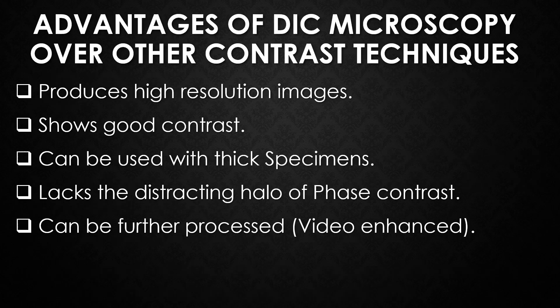An advantage of using DIC Microscopy over other contrast techniques such as phase contrast or oblique contrast is that in DIC, the full aperture of the microscope is used. For example, in phase contrast, the annulus of the condenser restricts the aperture, reducing the resolution of the image. And unlike phase contrast, DIC images are not disturbed by halo artifacts.